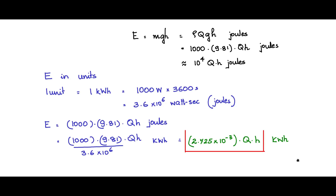So the hydraulic energy is given as 2.725×10⁻³ × q × h kilowatt-hours, where q is in cubic meters and h is in meters. This is one way you will commonly find it expressed in literature.